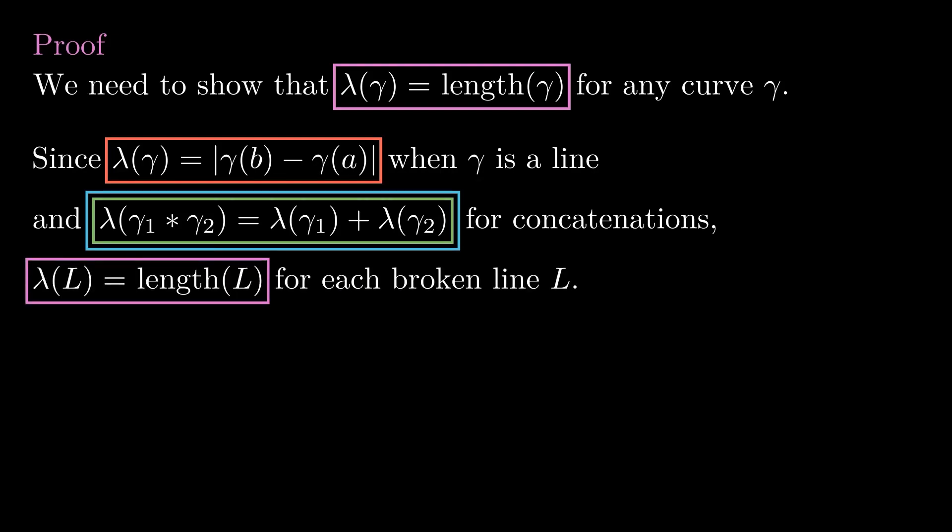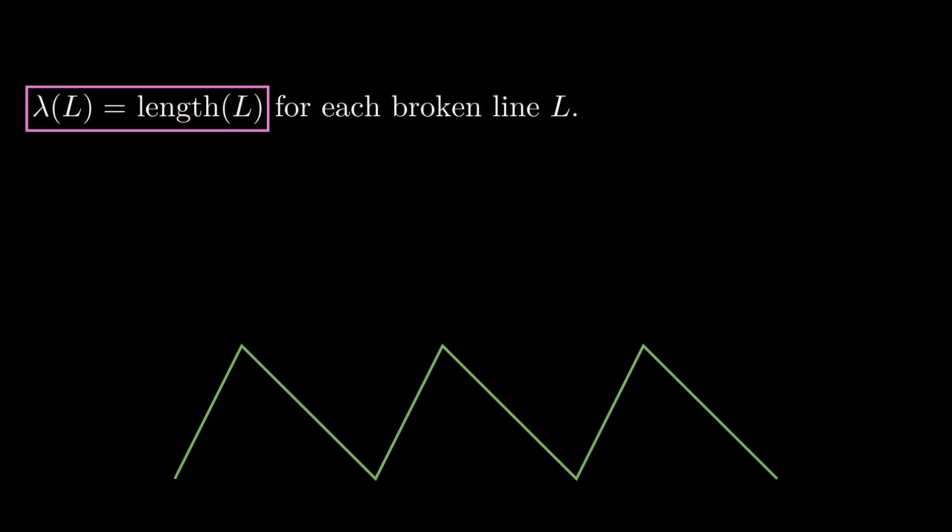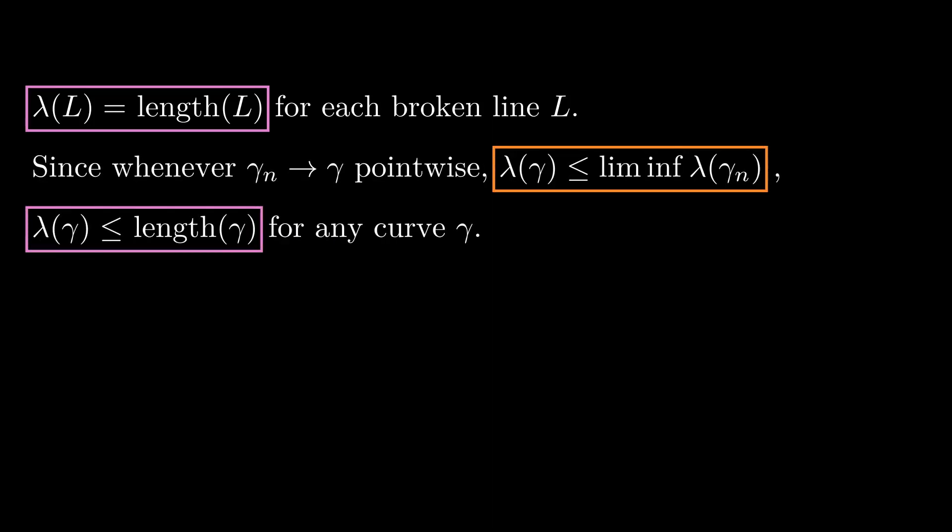As we mentioned at the beginning of the lesson, any curve can be approximated by broken lines whose lengths approximate the length of γ. So by the limit property, for any curve γ, λ(γ) is at most the limit of the λs of such broken lines, which are in turn the lengths of these broken lines that converge to the length of γ. This implies that λ(γ) is less than or equal to the length of γ.